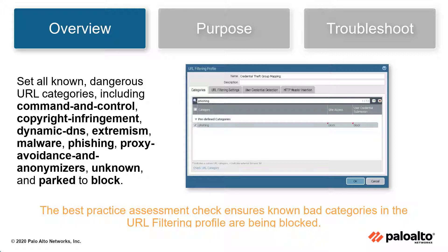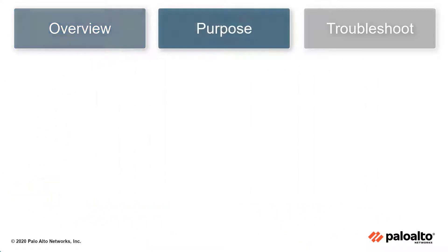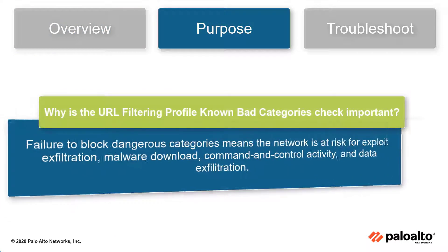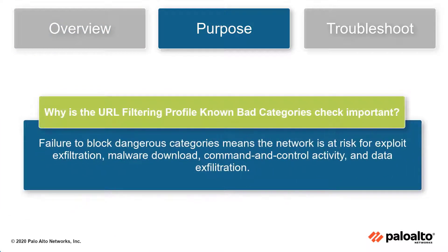The URL filtering profile known bad categories best practice check ensures known bad URL categories in the URL filtering profile are being blocked. Failure to block these dangerous categories means the network is at risk for exploit infiltration, malware download, command and control activity, and data exfiltration.